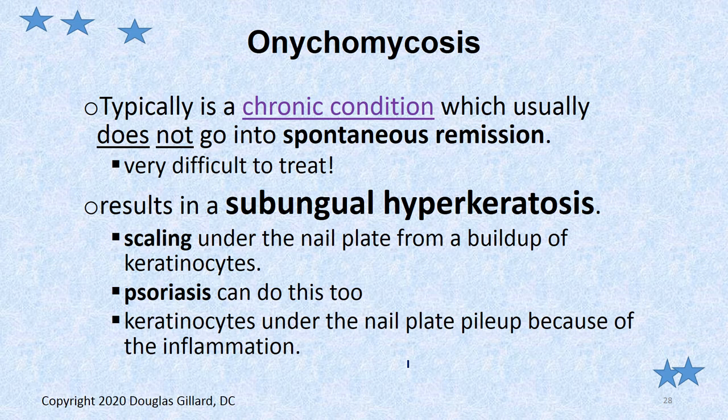If it gets under the nail plate and in the nail bed, the nail bed is stimulated to overproduce keratinocytes too fast. They are conveyor-belted to the top and you can't get rid of them and they start piling up under the nail. You get subungual hyperkeratosis — meaning hyperkeratosis under the nail — because of the body's response to these things. Psoriasis can do the same thing; only with psoriasis, you get pitting in the nail.